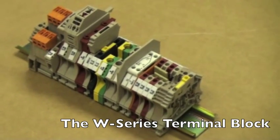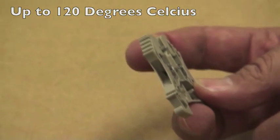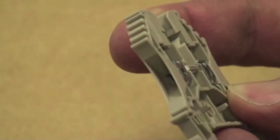The W-series terminal block, molded from Weeben material, is thermally stable up to 120 degrees Celsius, yet still retains a high degree of flexibility and breakage resistance.